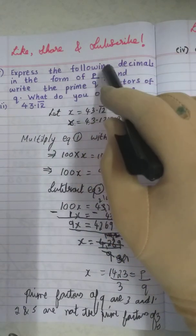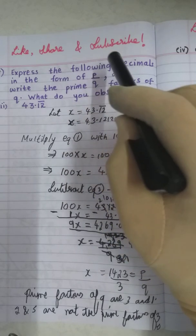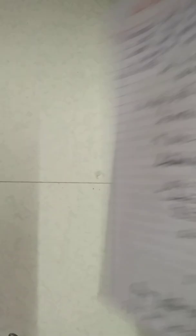So decimal form is given, we have to convert it into rational form of P by Q and then write the prime factors of Q and then say what we observe. So let's start.